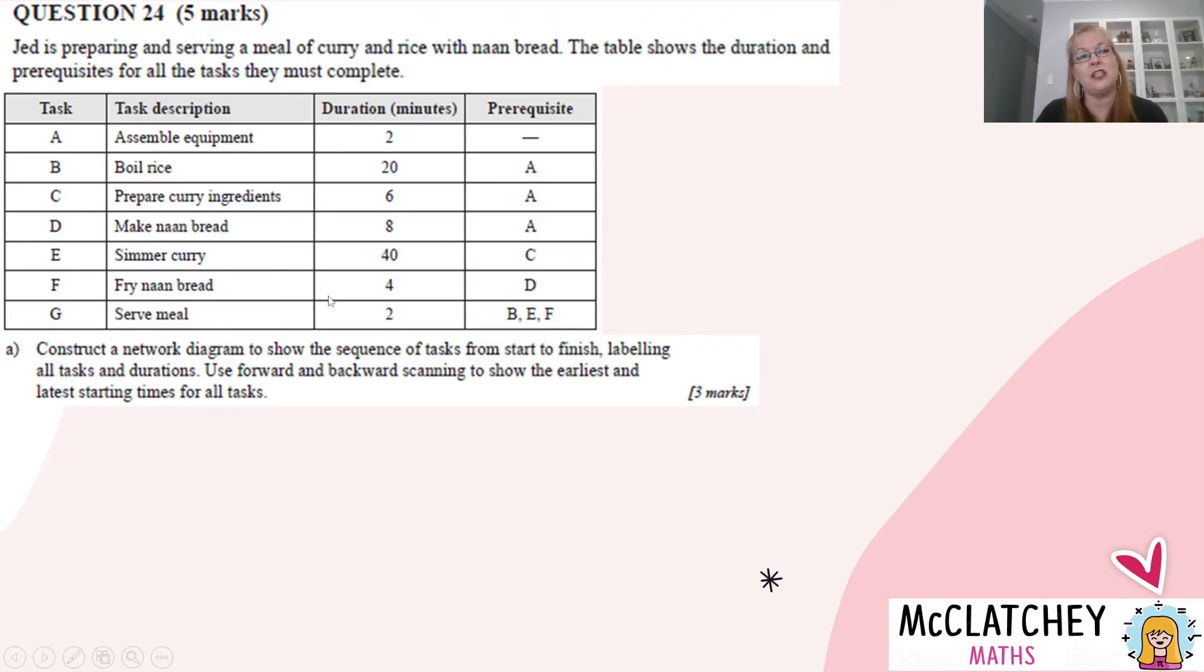So if we just have a bit of an investigation here, we know our first task is going to be task A. It has no prerequisites, and it's got three different activities coming out of it. So let's start with drawing one of these bubbles with the line through the center. Your textbook might do it a little bit differently. However you've been taught is fine.